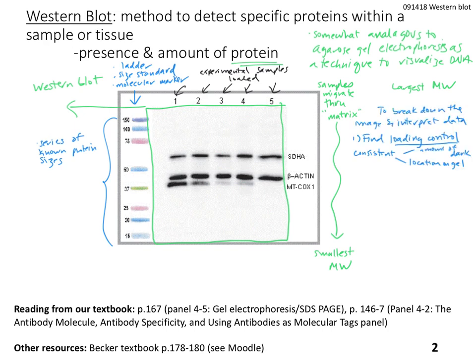Now we're going to break down the image, which is a key technique to interpret data — something we'll do throughout the rest of the term and on every exam. The first thing to do is to locate the loading control. The loading control can be identified for two reasons: it's consistent across all of the experimental treatments, and it's going to be one of these series of dark bands — consistent in darkness and in its location on the gel.